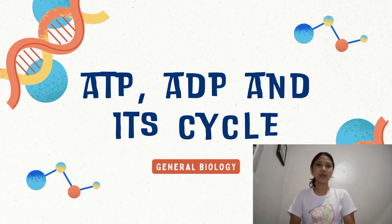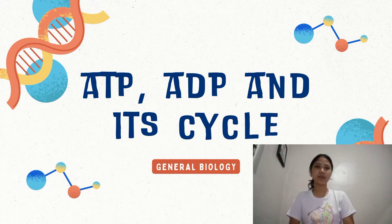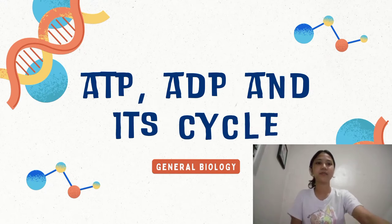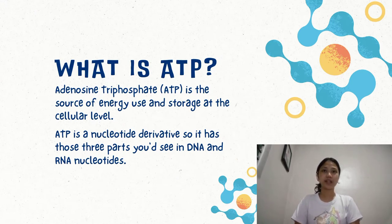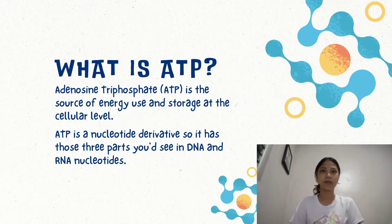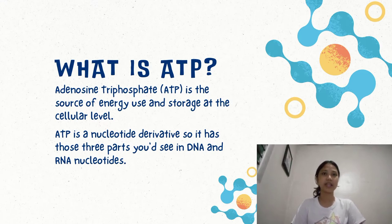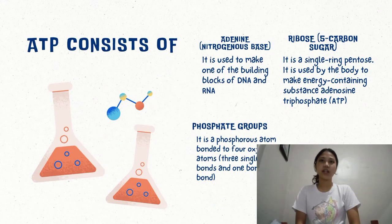Good day everyone. I am Kyla Mayu Venus from Grade 12 Generosity and I am here to present to you ATP and ADP and its cycle. What is ATP? Adenosine triphosphate is the source of energy use and storage at the cellular level. ATP is a nucleotide derivative, so it has those three parts you'd see in DNA and RNA nucleotides.